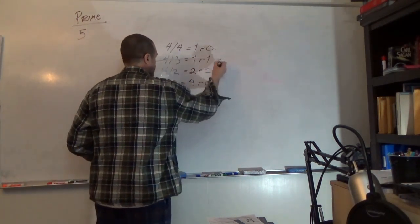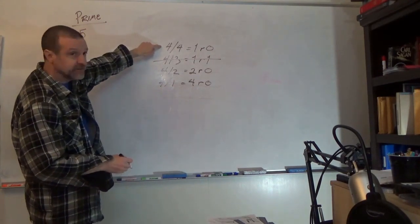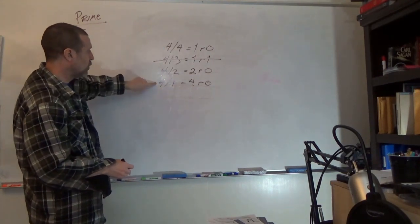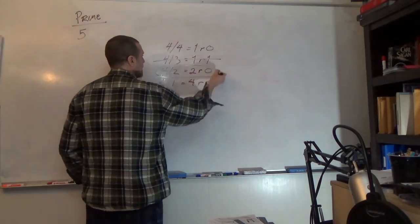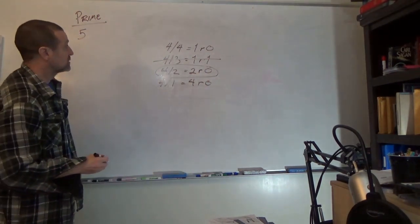So 4 can be divided evenly by 4, 2, and 1. Because it can be divided by 2, that means 4 is not prime.